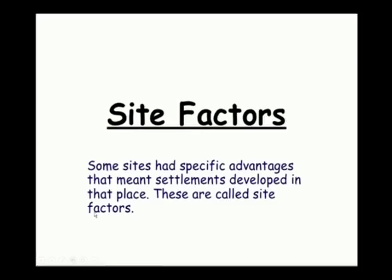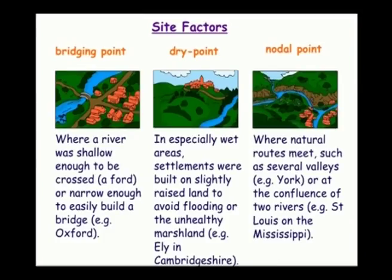What are the basic site factors? When talking of settlements, how are these factors coming into being? Some sites had specific advantages that meant settlements developed in that place — these are called site factors. The first is the bridging point, where a river was shallow enough to be crossed, so a ford or a narrow enough bridge or road can be built. This happened in Oxford, where if the bridge had not been possible, the town could not have been established.